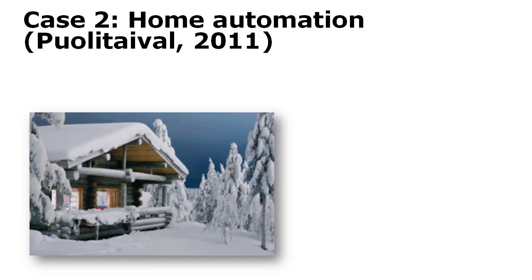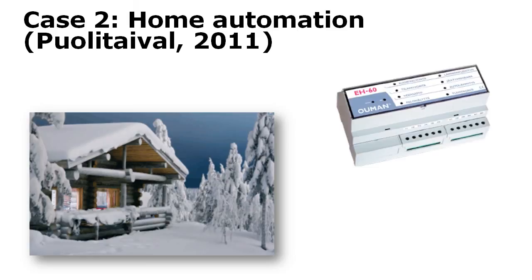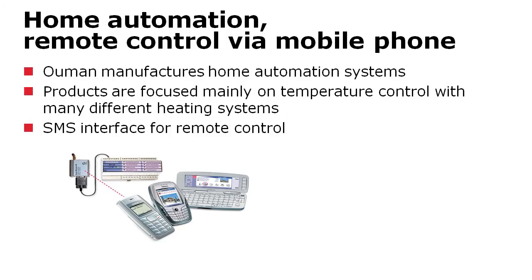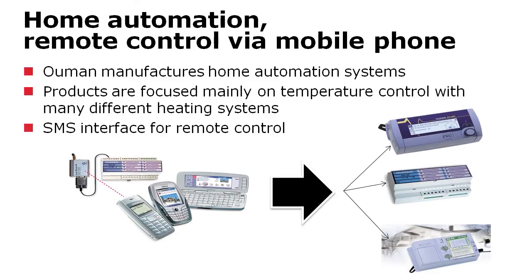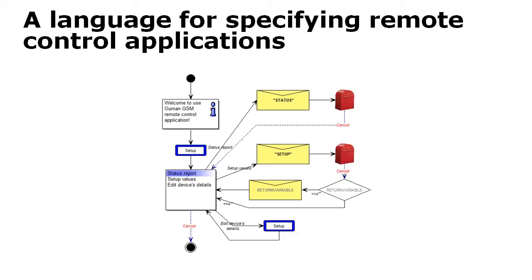The second case is a totally different environment — not UI-specific, but remote control dealing with home automation systems: heating, lights, and so forth. A company called Loman makes home heating systems and wanted to control them with mobile phones. Loman created languages for specifying remote control applications, where modeling concepts deal with widgets and different kinds of services to the phone and how it integrates with Loman's heating system.